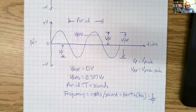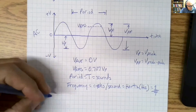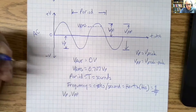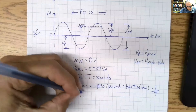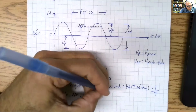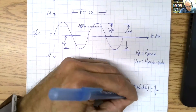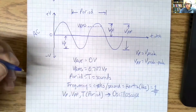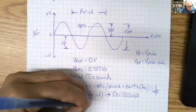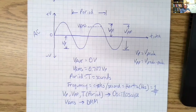How do we measure these things? The peak, peak-to-peak, and period we measure with an oscilloscope. V RMS we measure with a DMM. Most scopes give you that measurement too, but typically we measure RMS with a DMM.